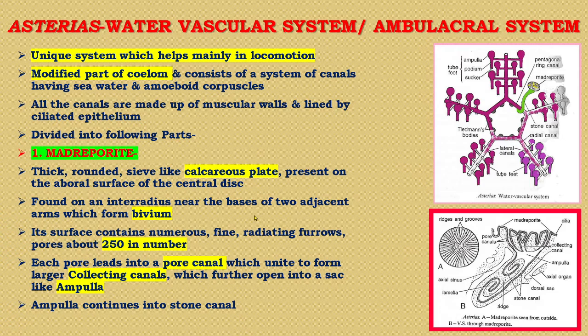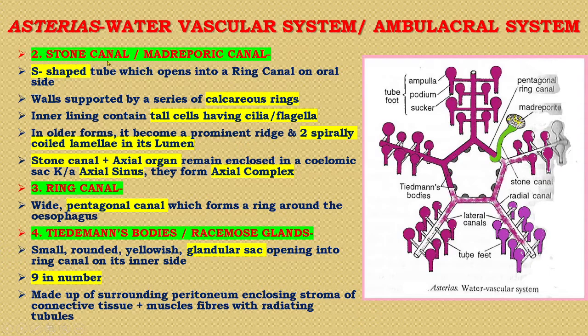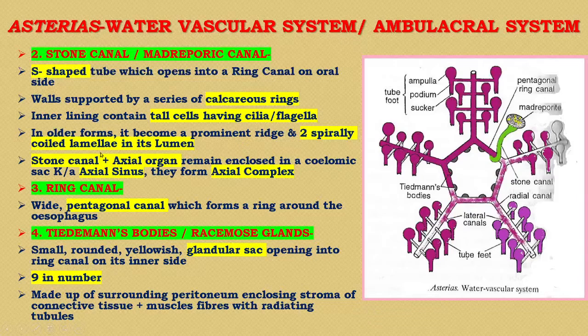The stone canal is the second part and is also known as the madreporite canal. It is a sigmoid (capital S-shaped) tube which opens into the ring canal on the aboral side. Its wall is supported by a series of calcareous rings, hence it is known as the stone canal. Its inner lining contains tall cells having cilia or flagella. In older forms of Asterias, it has a prominent ridge and two spirally coiled lamellae. The stone canal and axial organ remain enclosed in a coelomic sac known as the axial sinus.